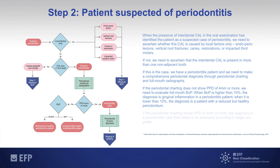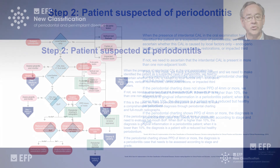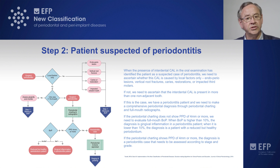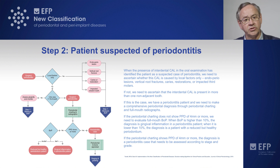If the periodontal charting shows probing pocket depths of four millimeters or more, the diagnosis is a periodontitis case that needs to be assessed according to the staging and grading system. In summary, this step two evaluates whether the patient is a periodontitis patient with gingivitis, without periodontitis, or a periodontitis patient with periodontal health.